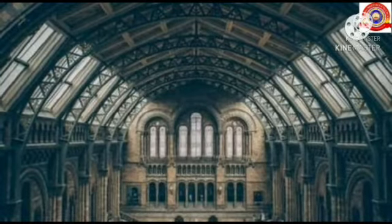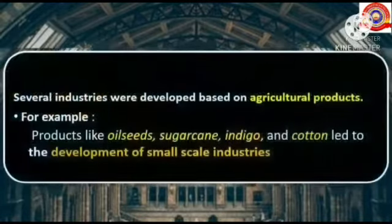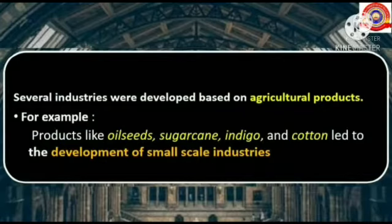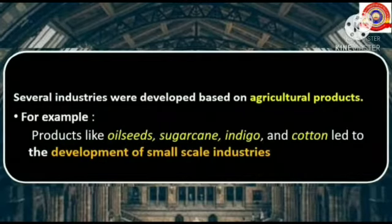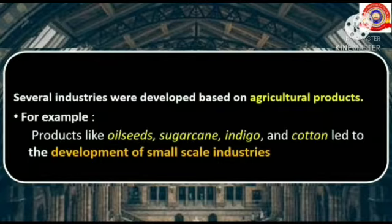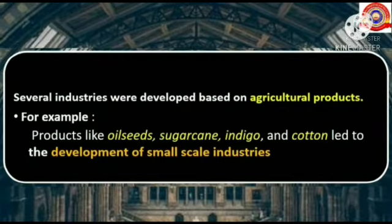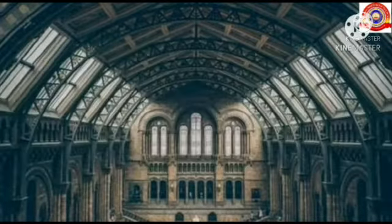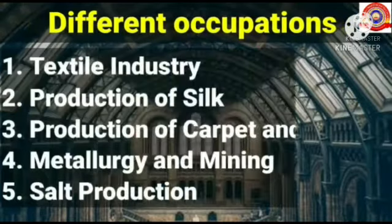Because of the expansion of agriculture, several industries were developed based on agriculture products. For example, products like oil seeds, sugarcane, indigo, and cotton led to the development of small-scale industries.